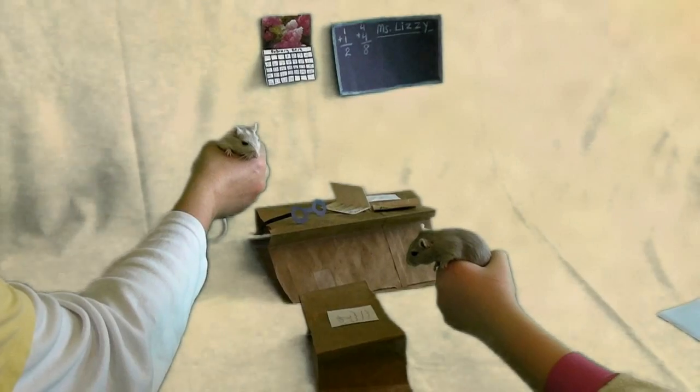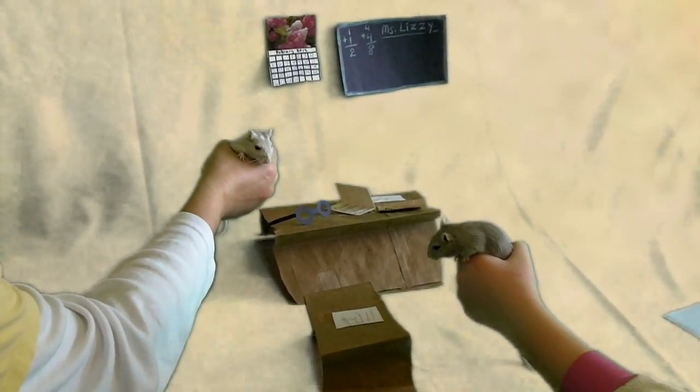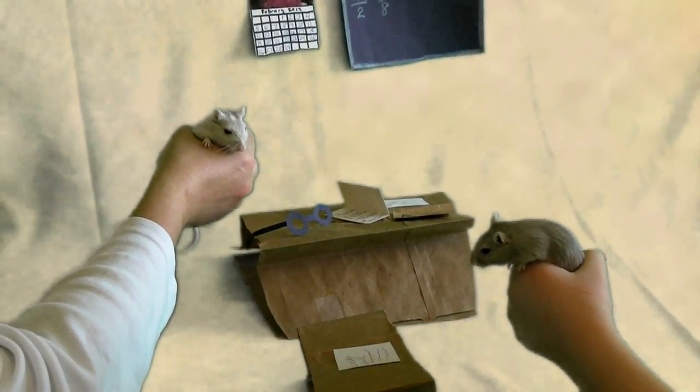How fast can a gerbil run? About 17 miles per hour. Okay.